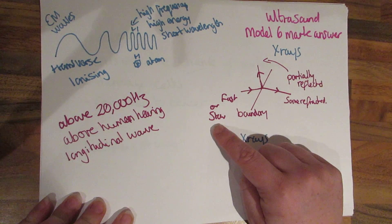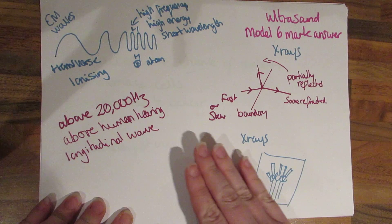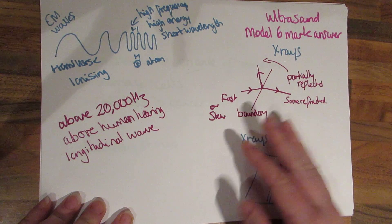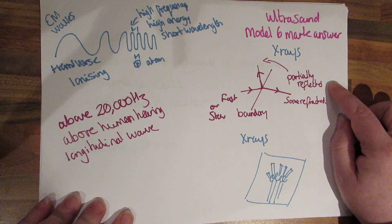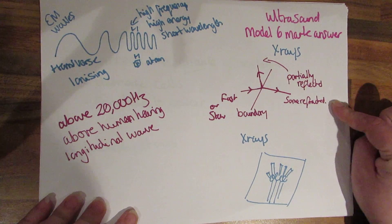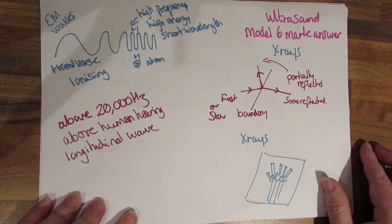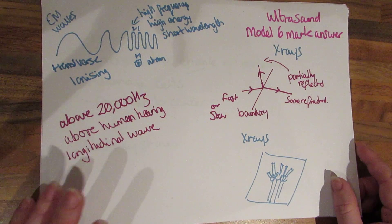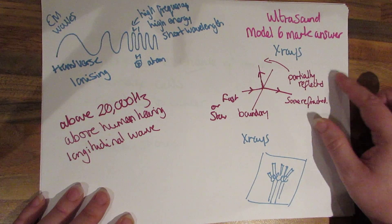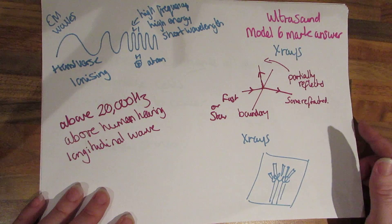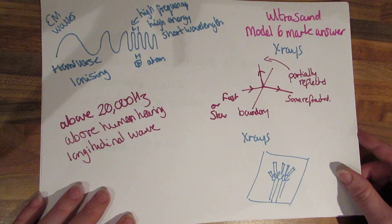Ultrasounds, this is when we have a boundary and there's a change between a fast and slow medium. You're going to have partial reflection and some of it's going to be reflected. There's going to be an oscilloscope which can look at the boundaries and can tell you the distance between these boundaries. Ultrasounds can also be used for treating kidney stones and x-rays can be used for treating cancer.